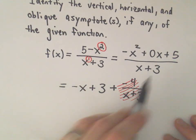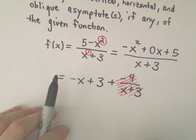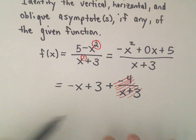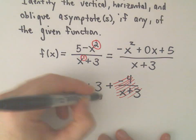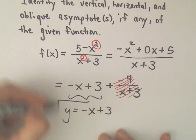So, again, we've now got everything we needed. We said our vertical asymptote was negative 3. We said that there are no horizontal asymptotes. But then our oblique asymptote will be the line y equals negative x plus 3.